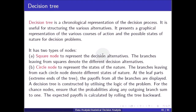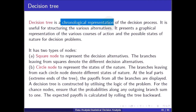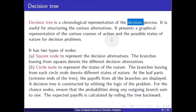Hello friends. In this video we will talk about decision trees. A decision tree is a chronological representation of the decision process. It is useful for structuring the various alternatives. It presents graphical representations of the various courses of actions and the possible states of nature of decision problems.